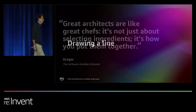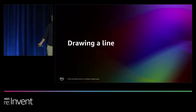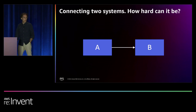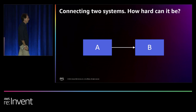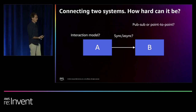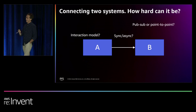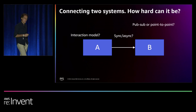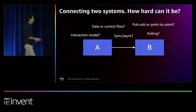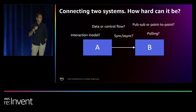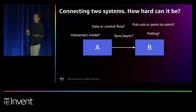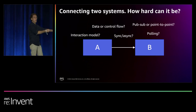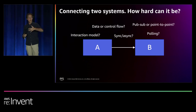So now we know the lines are important — let's draw some lines. How hard can it be? Here's system A and system B, A talks to B. But what does this line actually represent? Is this a remote procedure call? Is this a message? Is this an event? Is this synchronous or asynchronous? Is this publish-subscribe where the message goes to multiple places, or point-to-point where it only goes to one? Does this depict data flow or control flow? If this is polling, data and control flow go in opposite directions.